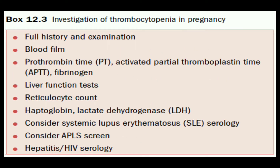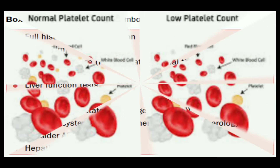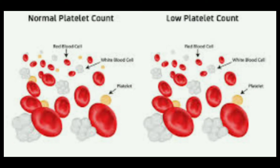How do we investigate a patient with thrombocytopenia in pregnancy? First, take a full history and examination. Then perform a blood film, and check prothrombin time, activated partial thromboplastin time, and fibrinogen levels. Liver function tests, reticulocyte count, haptoglobulin, and lactate dehydrogenase levels should be checked. Also consider systemic lupus erythematosus serology, APLS screen, and hepatitis and HIV serology. This figure shows normal platelet counts versus low platelet counts on the peripheral smear.